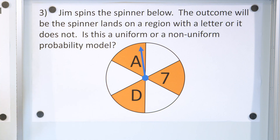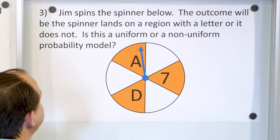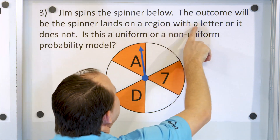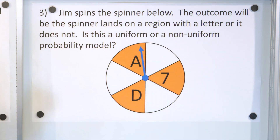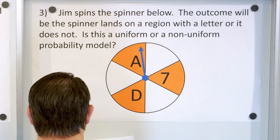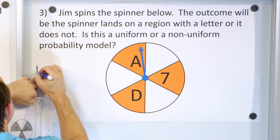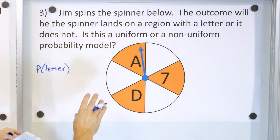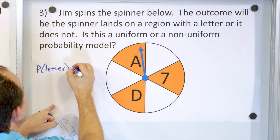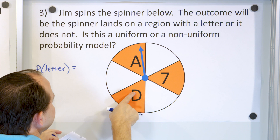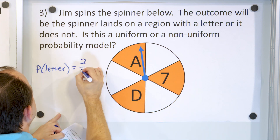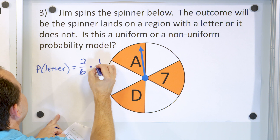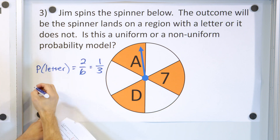Let's take a look at problem number three. Jim spins the spinner below. The outcome will be the spinner lands on a region with a letter on it or does not. Is it a uniform or non-uniform? So a letter or no letter. The probability of landing on a letter — we only have two letters out of a total of six. So the probability is two-sixths, which reduces to one-third when you divide top and bottom by two.